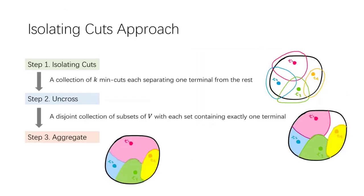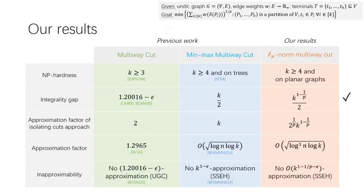That is the isolating cuts approach: find min t_i isolating cuts, uncross via posimodularity, aggregate remaining vertices. The analysis used Jensen's inequality. Next, I'll sketch how to adapt this to get the log-squared n approximation.